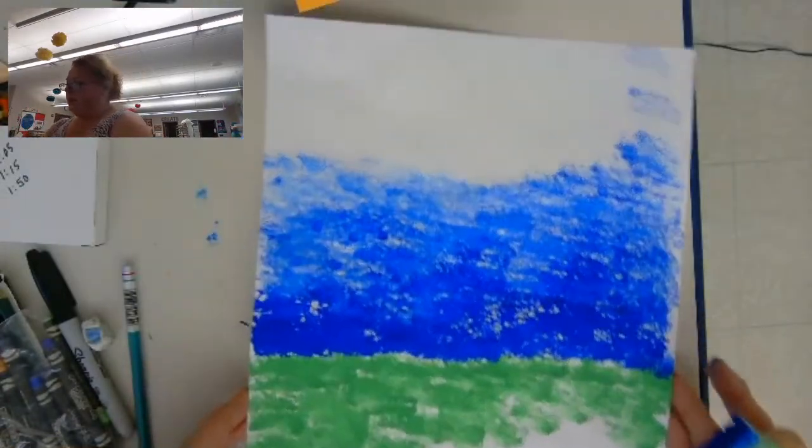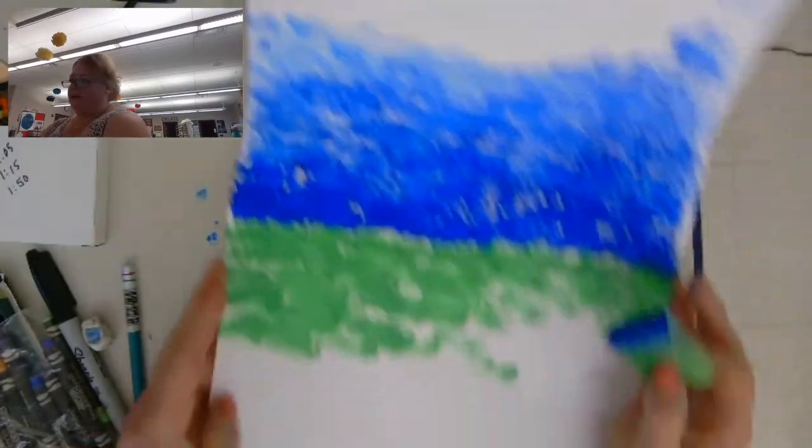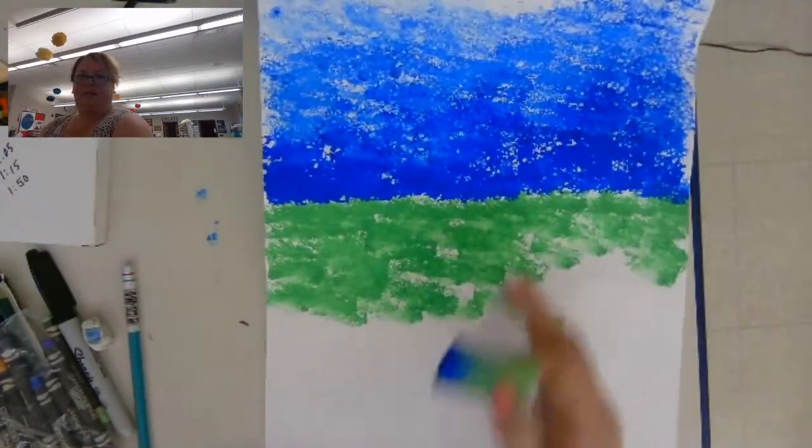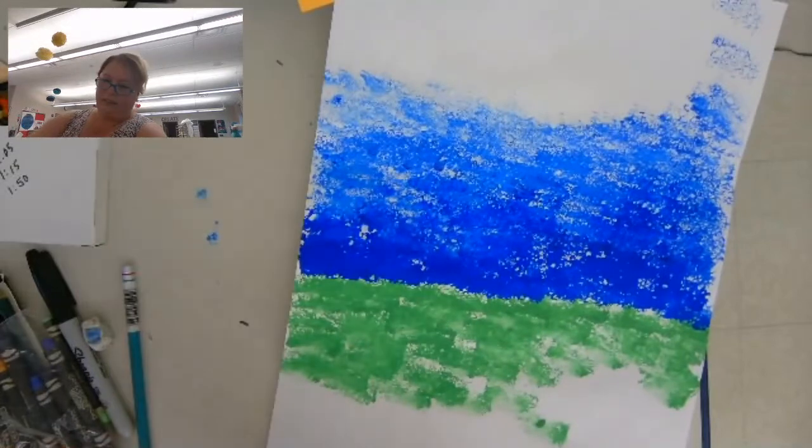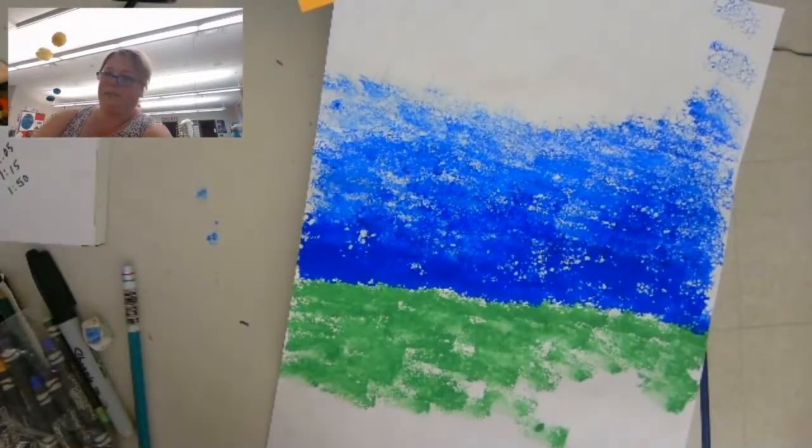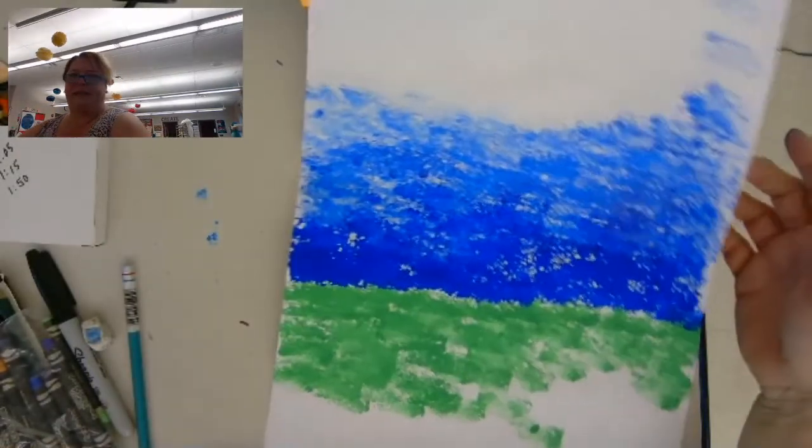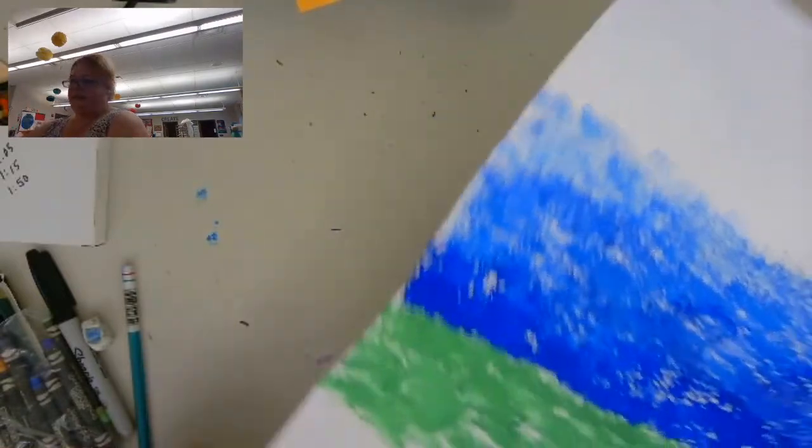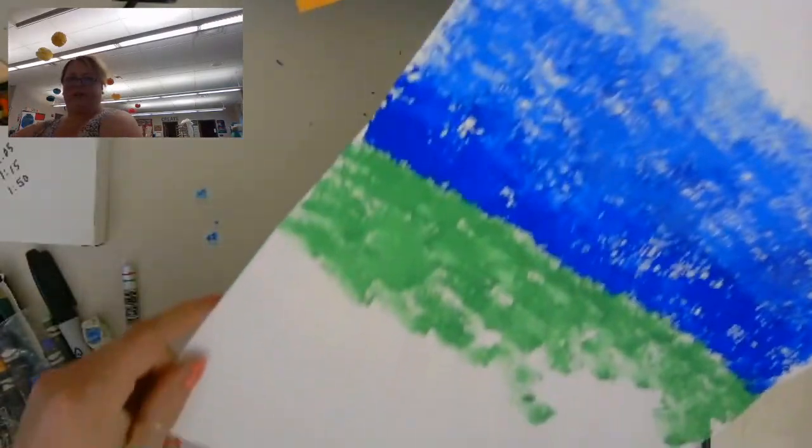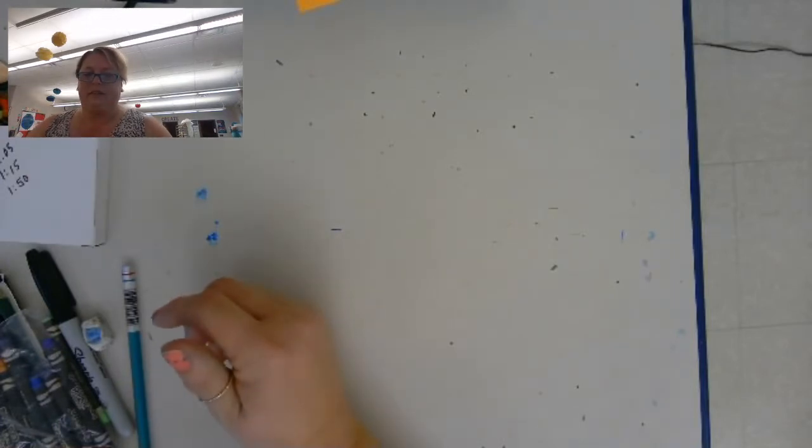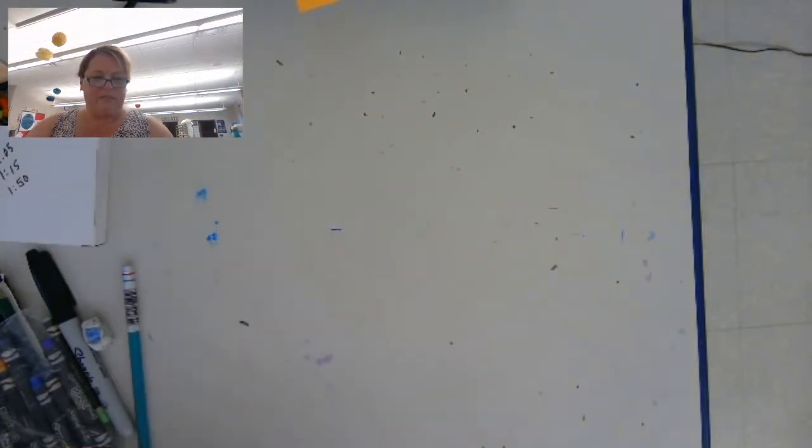So you're going to make this paper green and blue and then you're going to put that someplace to dry if you painted it. So you're going to fill the whole thing in. I just wanted to show you how to do it. So you can pause the video and do your background and then come back to the video.